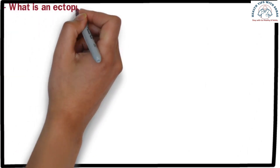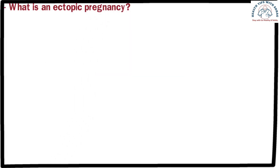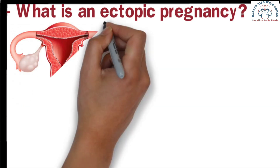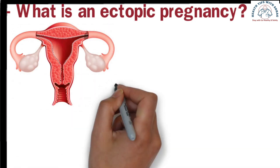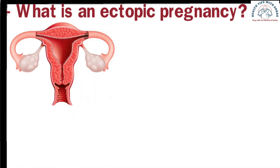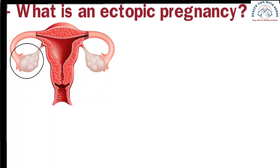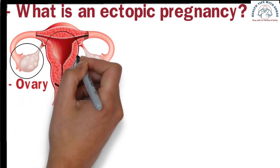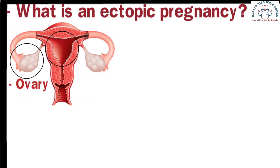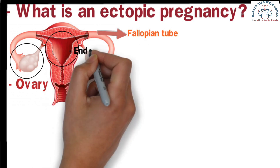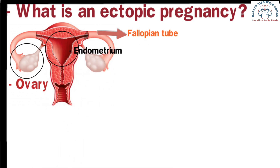What is an ectopic pregnancy? Before understanding ectopic pregnancy, we need to learn some basic concepts. Look at the picture — this is an image of the female reproductive system. This part is called the ovary. This is the uterus. The part connecting the ovary and the uterus is called the fallopian tube. Inside the uterus, this part is called the endometrium.